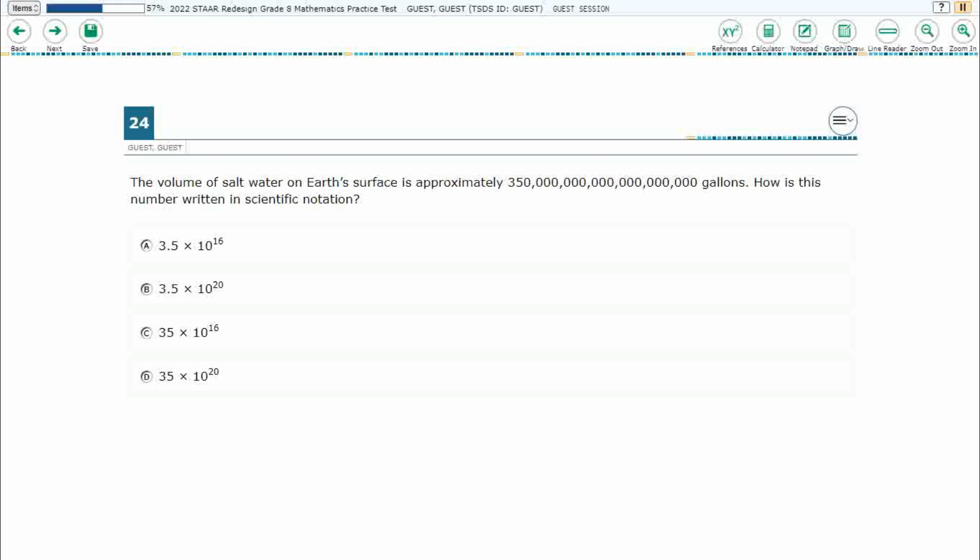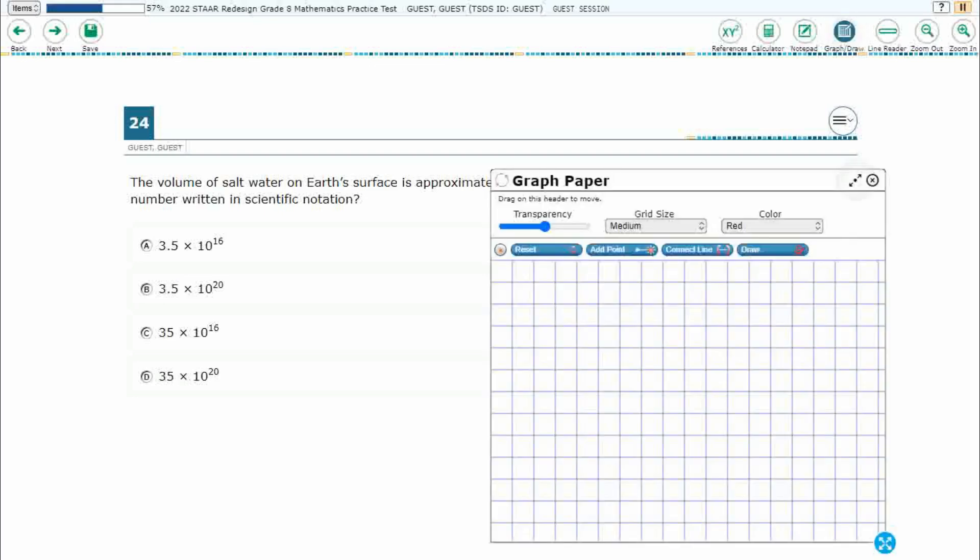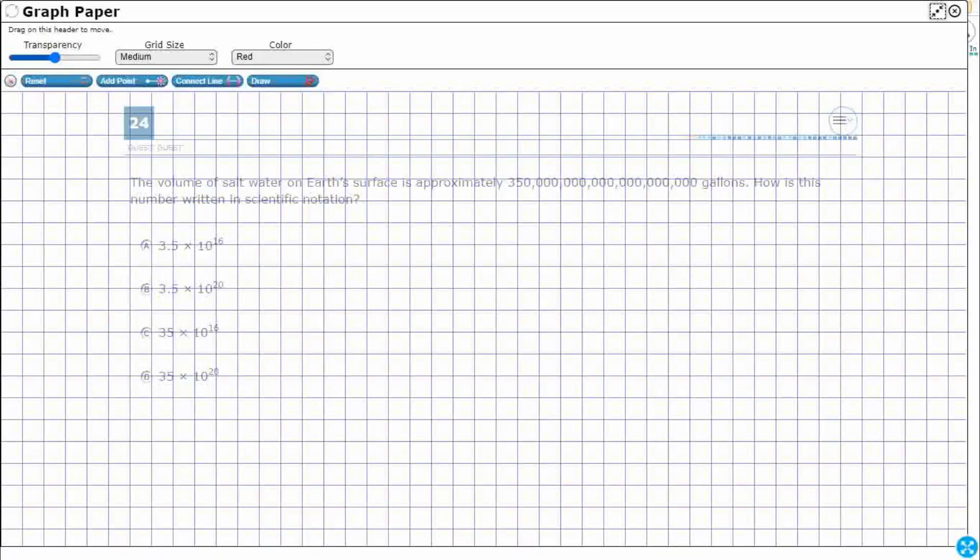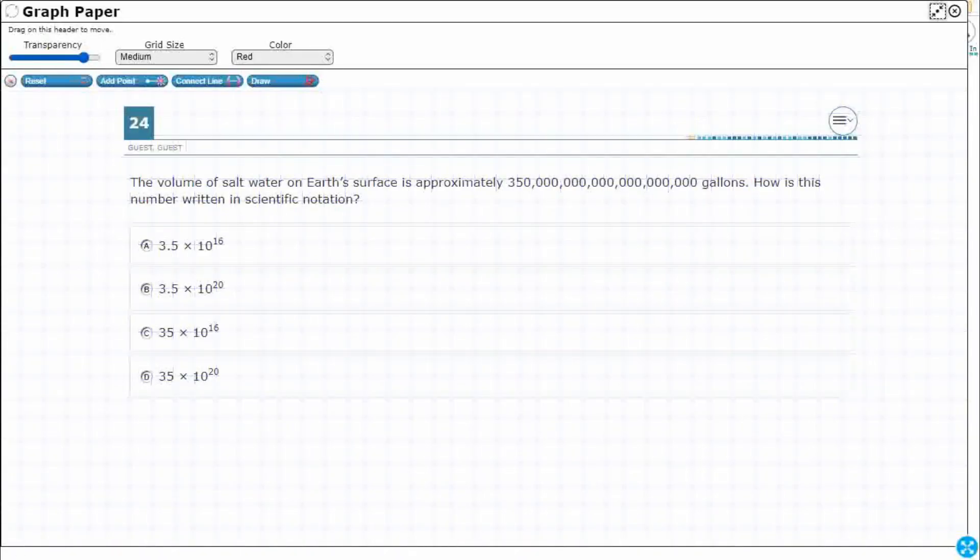So, the volume of salt water on Earth's surface is approximately 350, a whole bunch of zeros. What is this number written in scientific notation? Well, actually, this is 350 quintillion, but at a certain point, after we get past trillion, there's just too many zeros for us to really work with it. So, let's just label each of these periods.